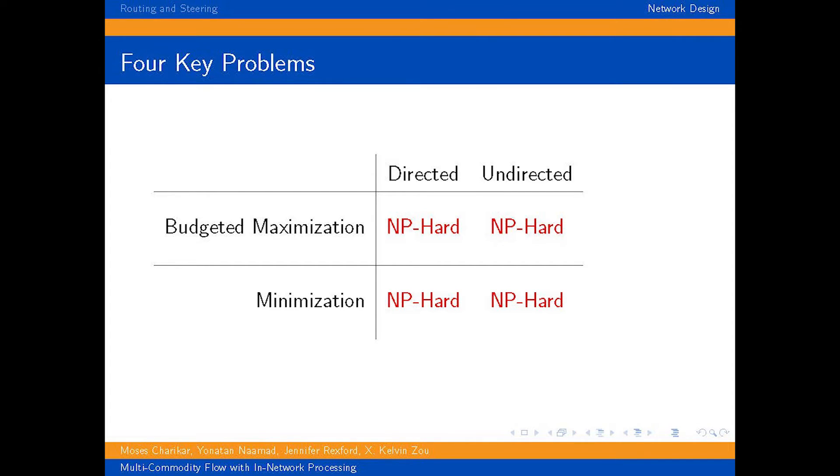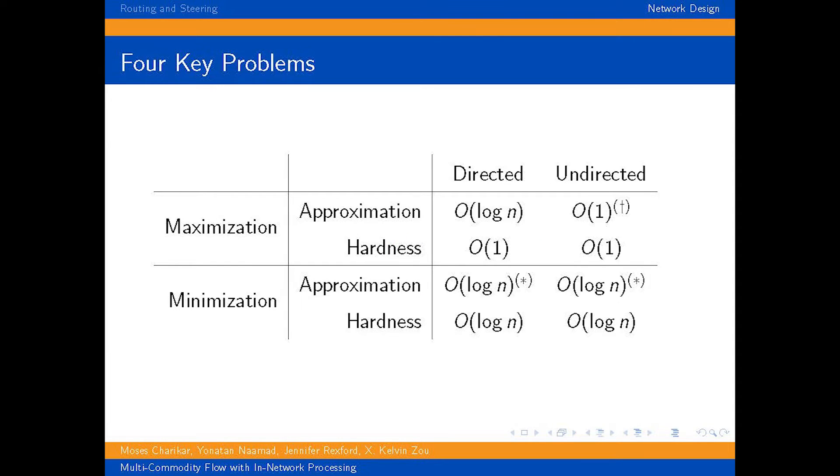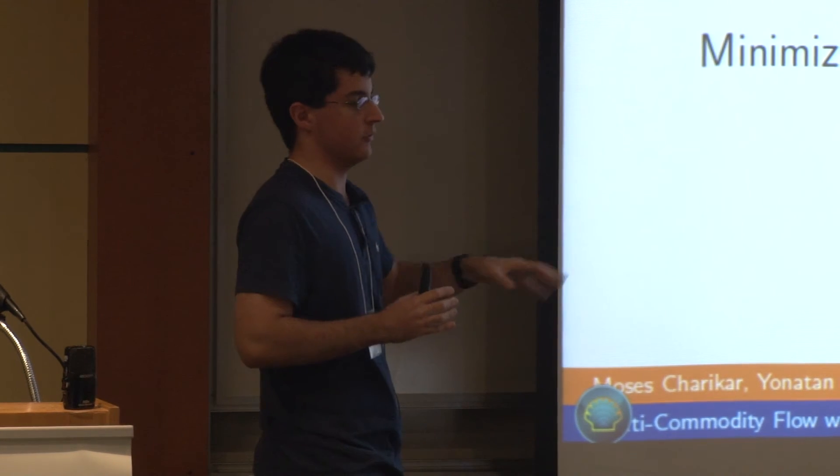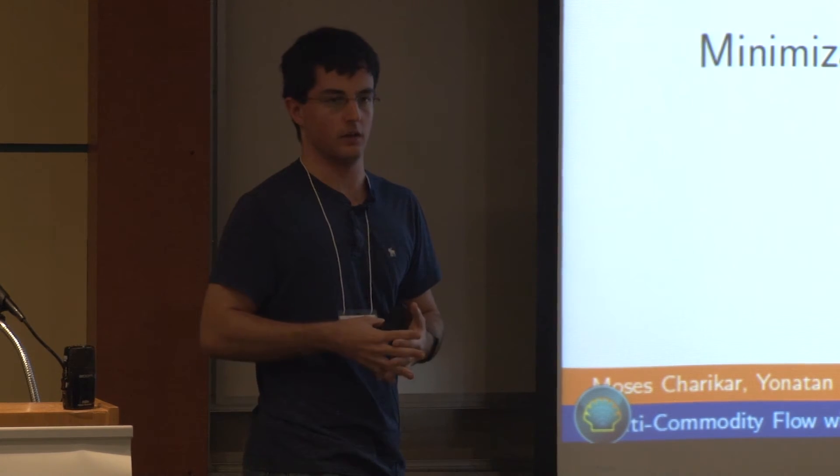So in terms of exact algorithms, we're not going to be able to do anything. But from an approximation point of view, you can actually do something for each of these up to some minor caveats. So I'm not going to go into what these caveats are, but the basic takeaway is that although none of these admit a PTAS or something like that, where you can get arbitrarily good approximations, everything has actually a pretty reasonable approximation to it, either constant or logarithmic or something along those lines.